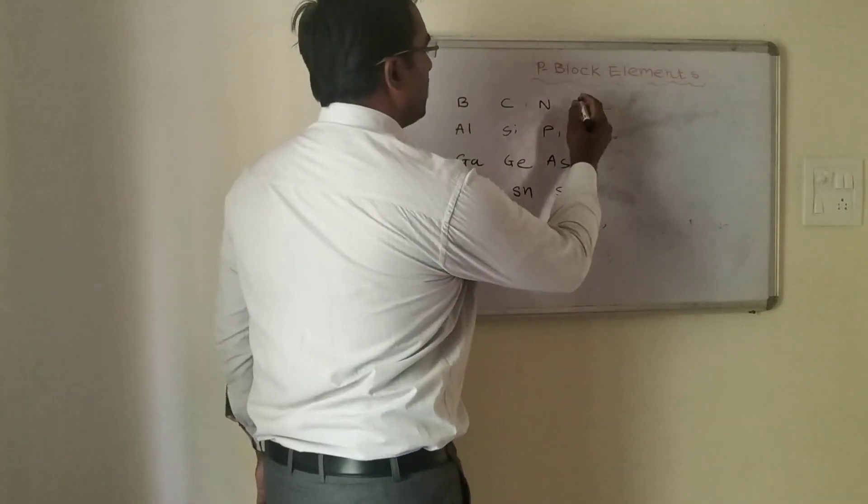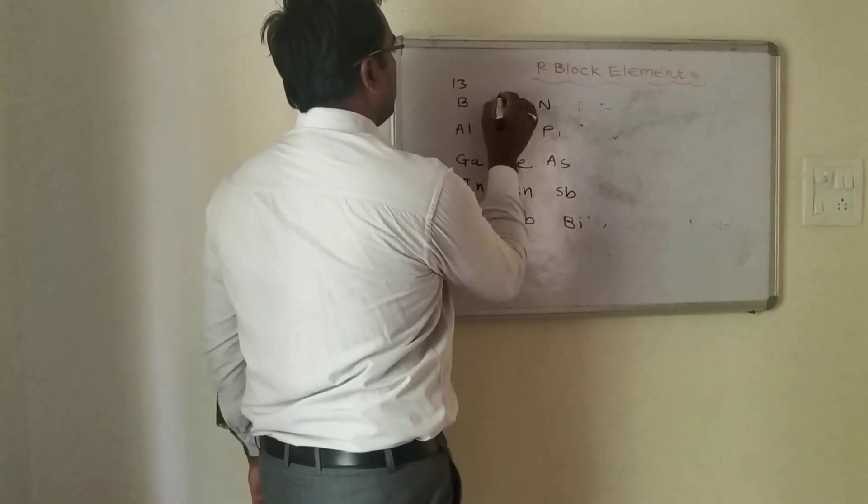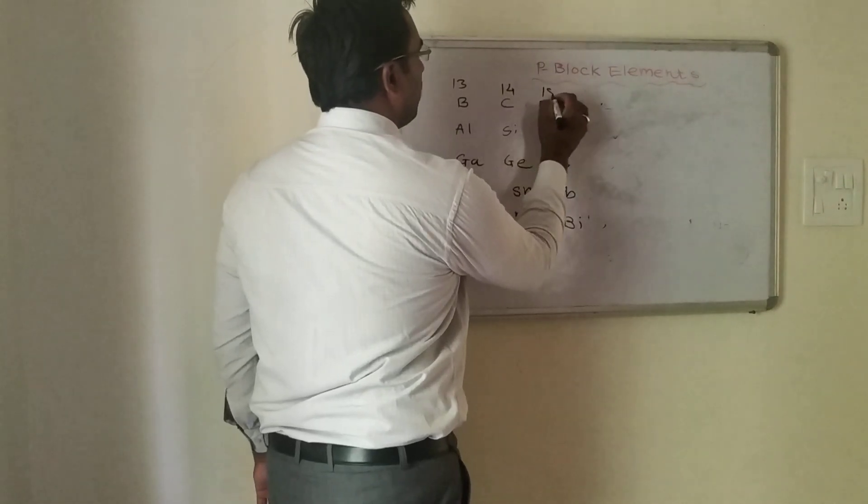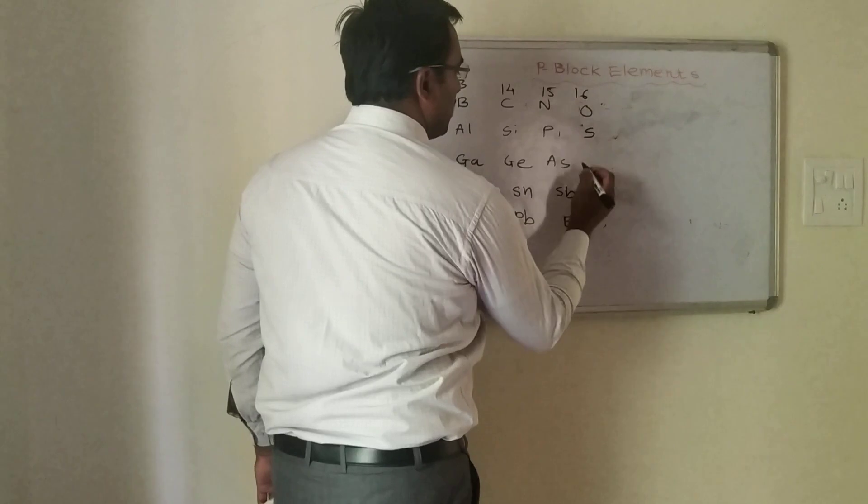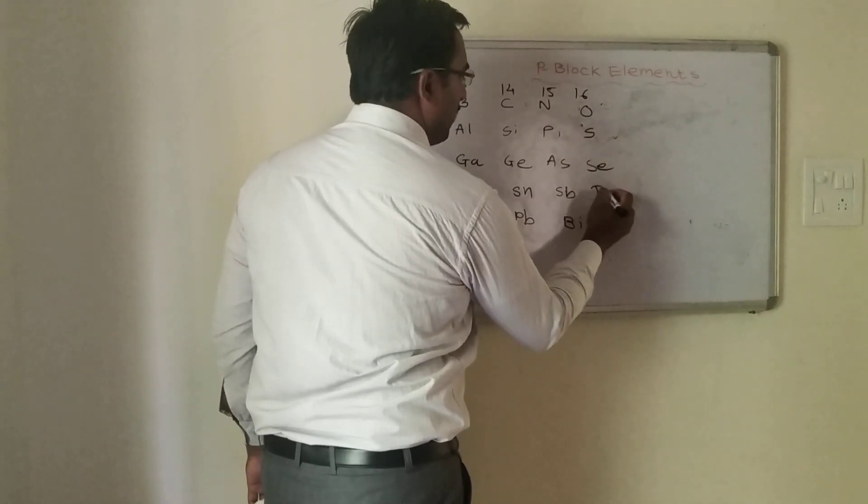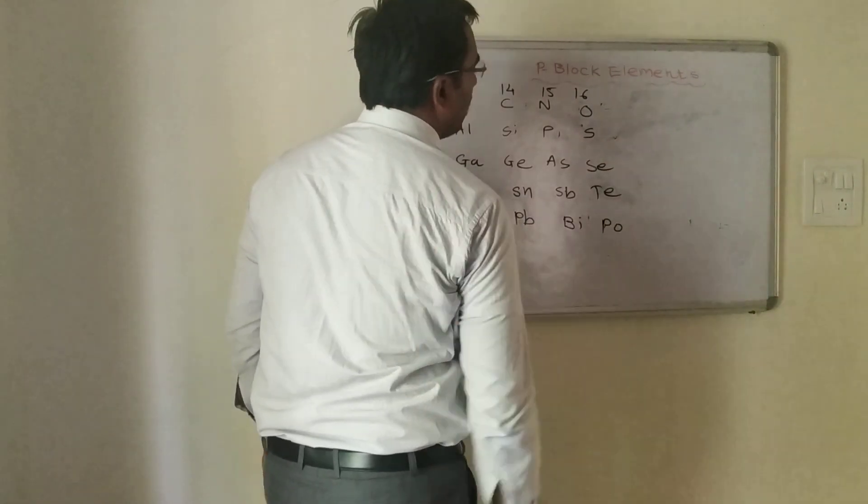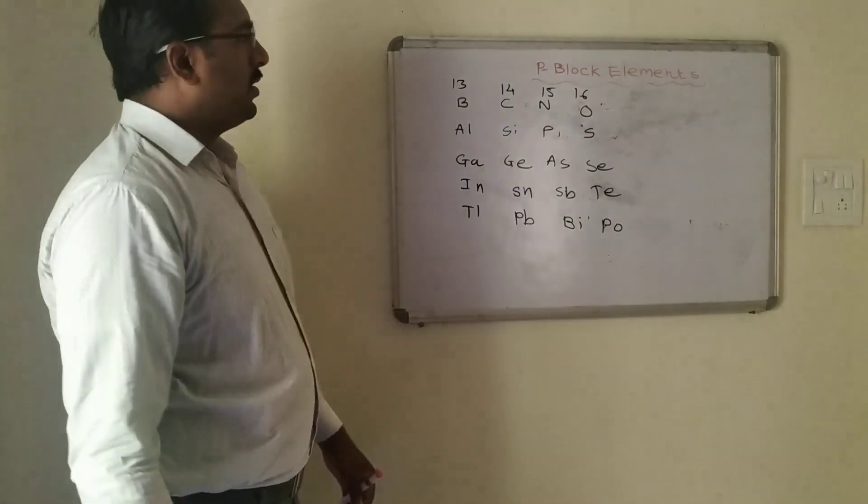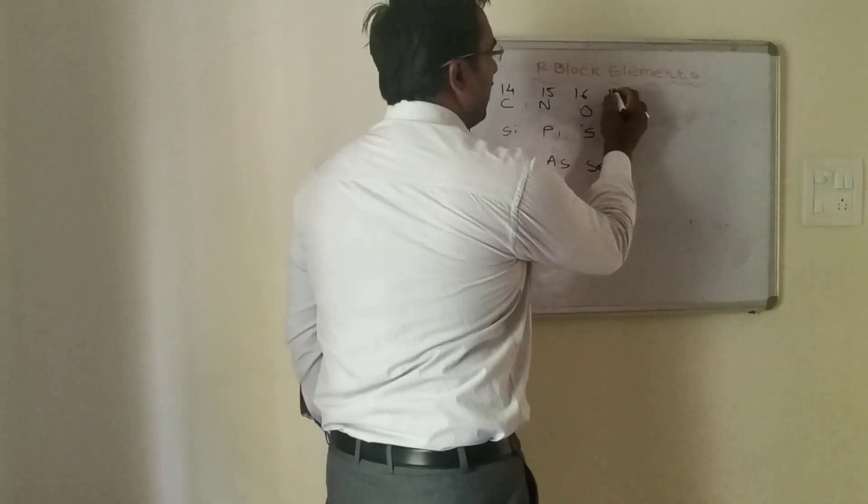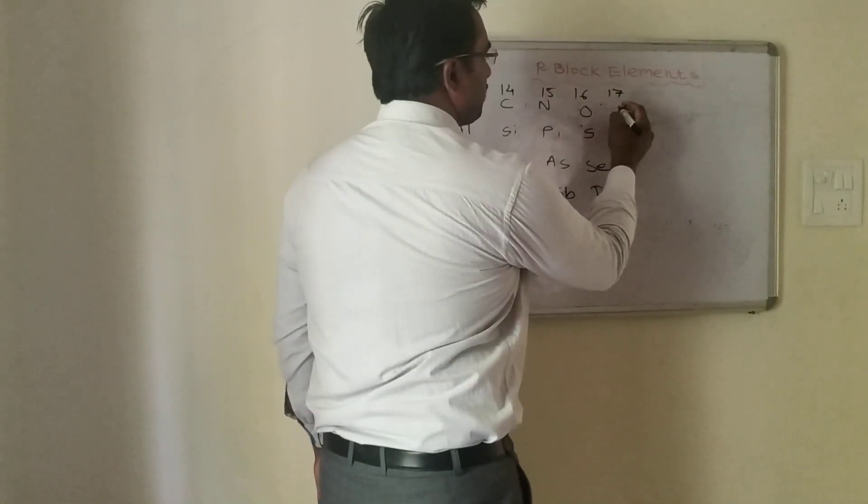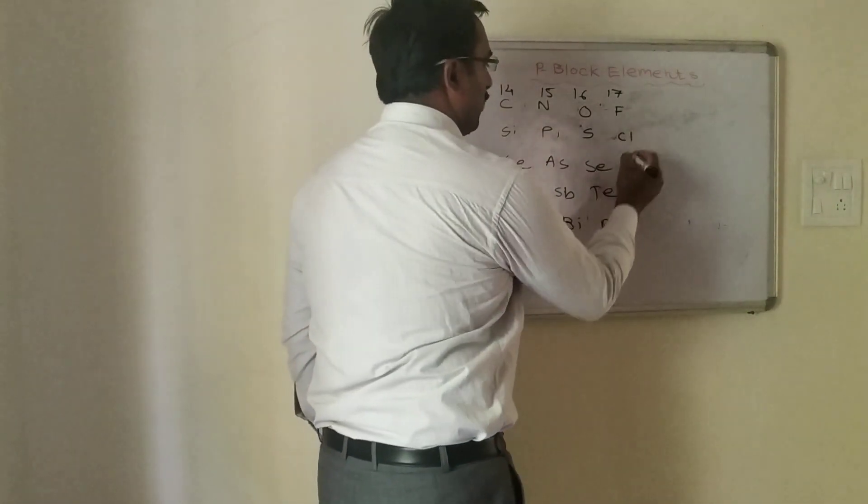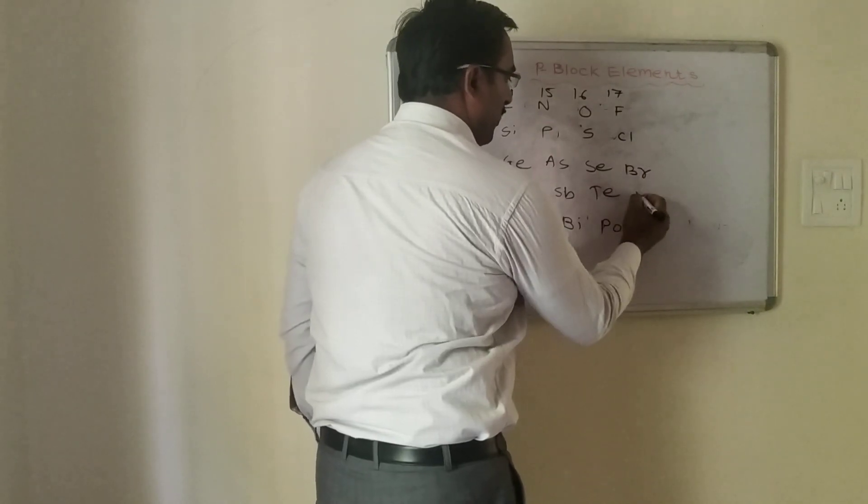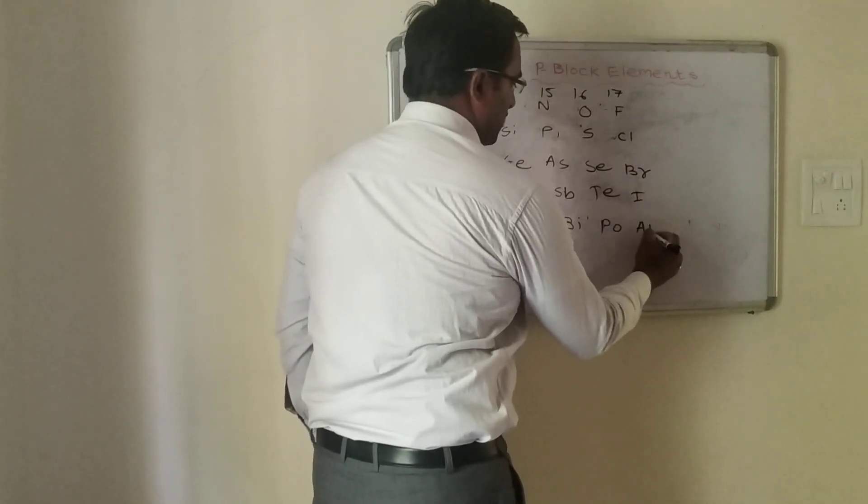Group 16 is the oxygen family: oxygen, sulfur, selenium, tellurium, and polonium. Then we have group 17, the halogen family, with representative member fluorine, then chlorine, bromine, iodine, and astatine.